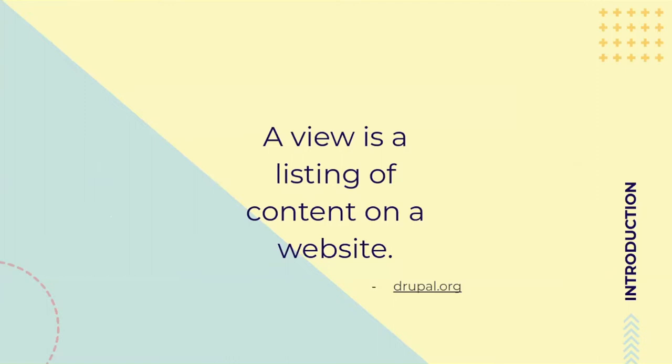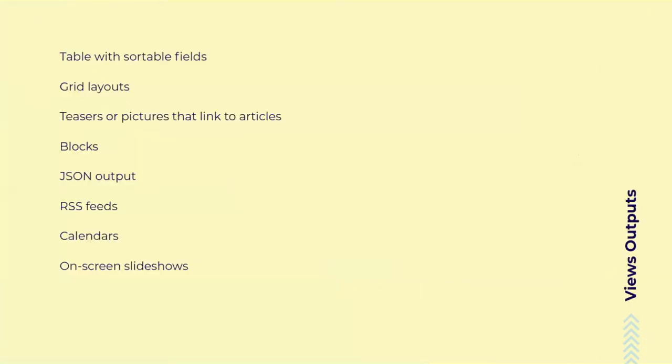The outputs from those different queries can come in all sorts of different ways. These are some examples from Drupal.org: you can output as a table, a grid — that collection view we're all used to — teasers or pictures from nodes, blocks placed in different parts of your site. The information can be output to JSON or RSS, put on a calendar, or in a slideshow. This is really just scratching the surface of what views can output.